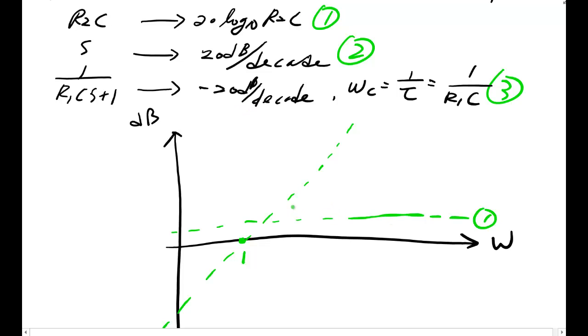The third one, say somewhere here, straight line and the slope will be with negative 20 dB per decade. And this point will be omega_c.